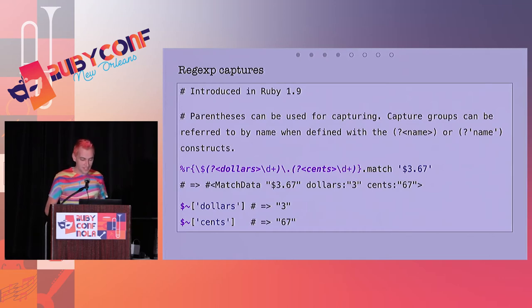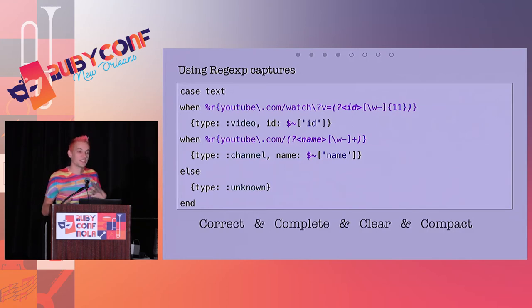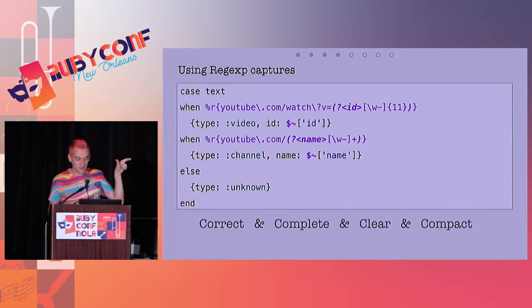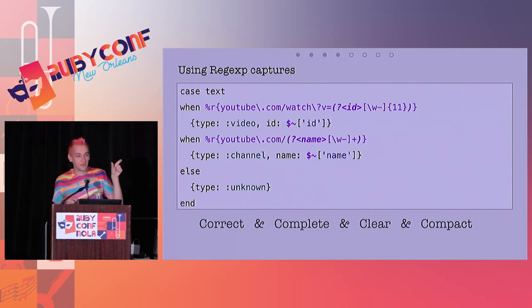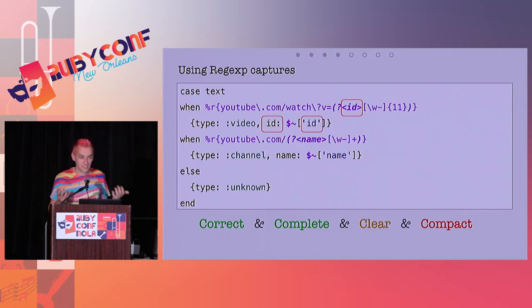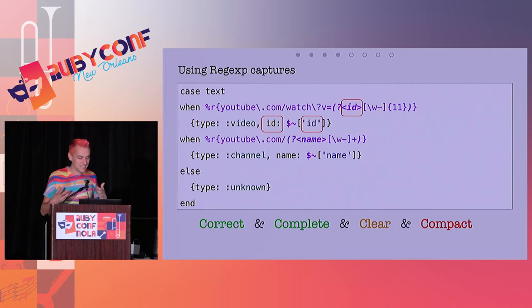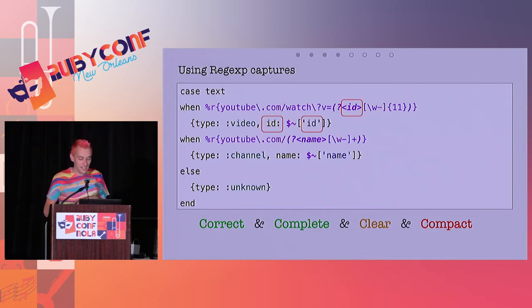With this in mind, we can now write our code in a slightly different way. We have the same regular expressions, but now we're capturing the thing we're matching. In the first case, we're capturing and calling it `id`. If it's a match, we take that and return it in the resulting hash as ID. In the second case, we match what is the channel name and return it. Finally, we have a solution that is correct and also complete. But we're Rubyists, so we want to make things a little better. It's still not compact — the name `id` or `name` we gave appears three times each.